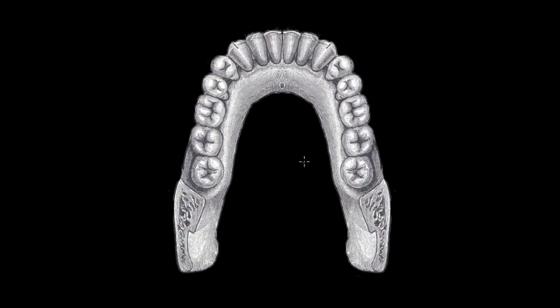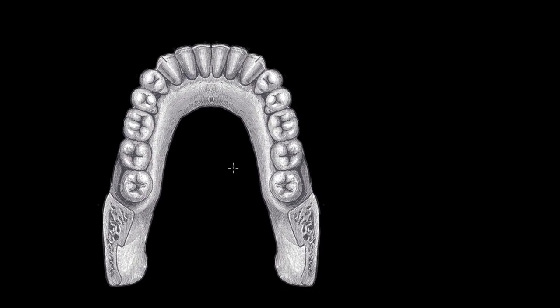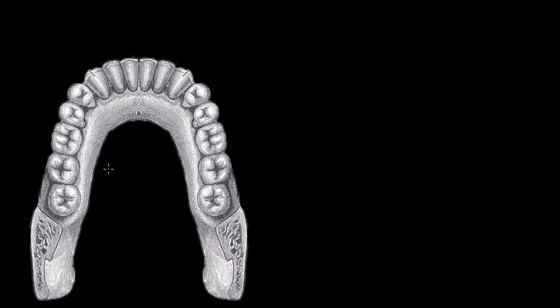Now that we've talked about the mouth in general, let's put a smile on that face and take a look at the teeth in a little more depth. What we have here is an image of the lower jaw — another term for the lower jaw is the mandible. This is your mandible right here, with your left side and your right side, so you can follow along as we talk about your teeth.